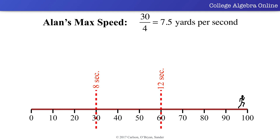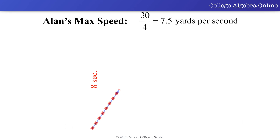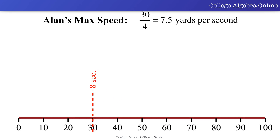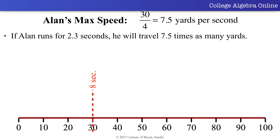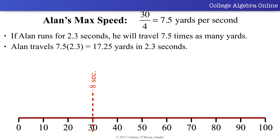In the previous video, we saw that Allen's max speed was 7.5 yards per second, since Allen can cover 30 yards in 4 seconds while traveling at his max speed. Since Allen's max speed is 7.5 yards per second, if he runs for 2.3 seconds at this speed, he will travel 7.5 times as many yards. Therefore, Allen will travel 7.5 times 2.3, which equals 17.25 yards in 2.3 seconds.